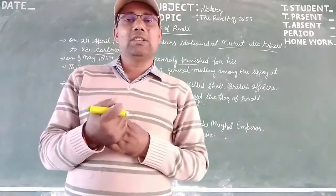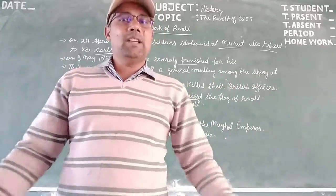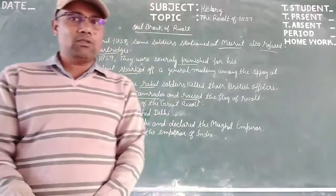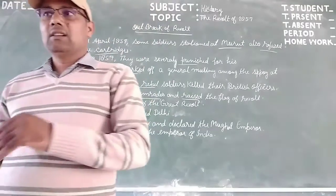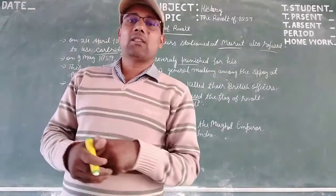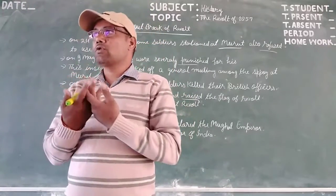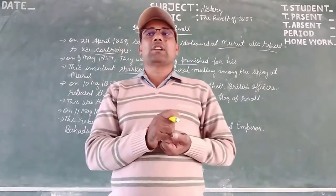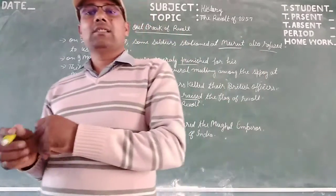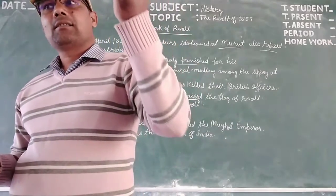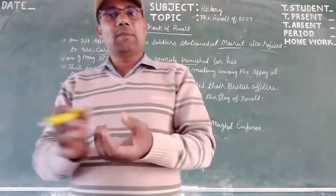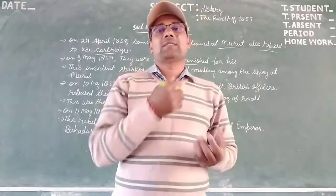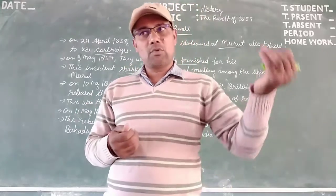Rebels captured Delhi and declared the Mughal Emperor as their leader.